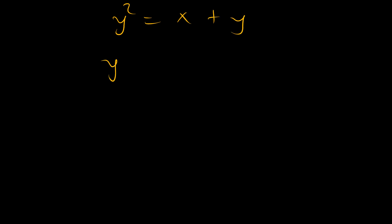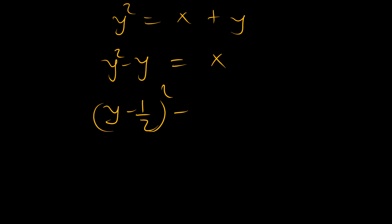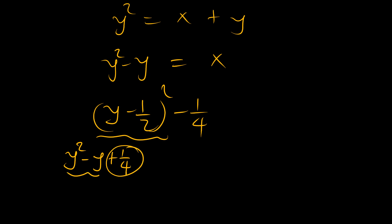Bringing y to the left side, we get y squared minus y equals x. We can complete the square: y minus one half squared minus one quarter equals x, because y squared minus y plus one quarter is the perfect square, and we subtracted that quarter. So y minus one half squared equals x plus one quarter.